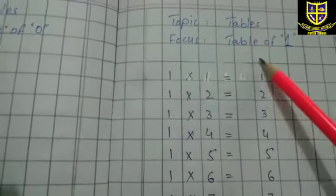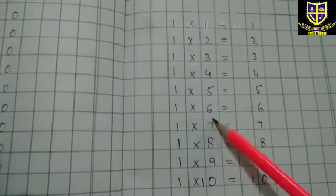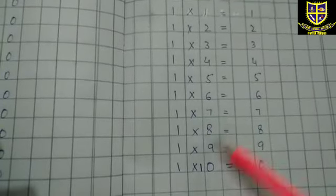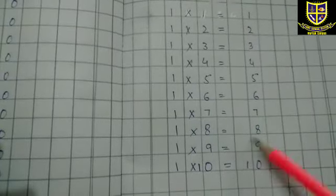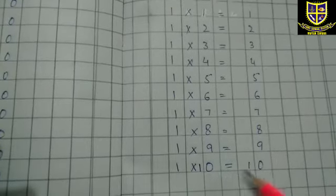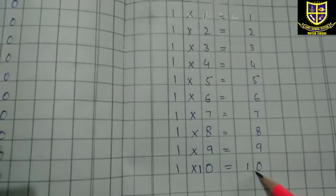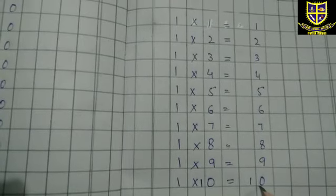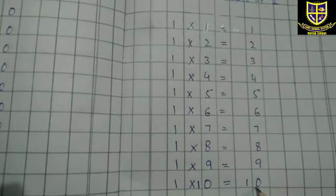اسی طرح copy میں یہ table لکھنا ہے۔ Next page پر topic: table of one — one one's are one، one two's are two، one three's are three، one four's are four، one five's are five، one six's are six، one seven's are seven، one eight's are eight، one nine's are nine، one ten's are ten۔ یہاں پر آج کا lecture ختم کرتے ہیں۔ Next video میں unit number two start کریں گے۔ Till then take care and Allah Hafiz۔